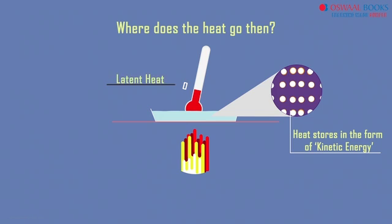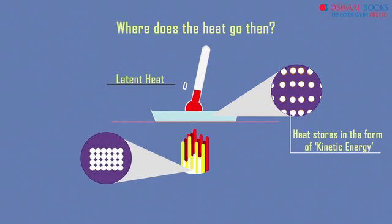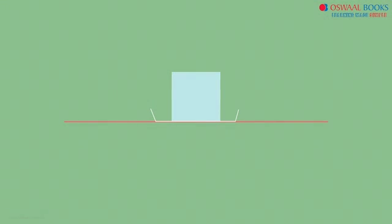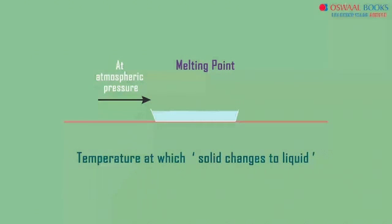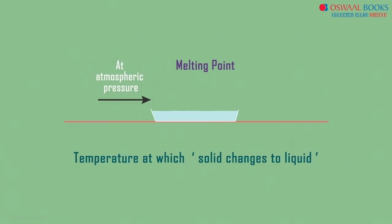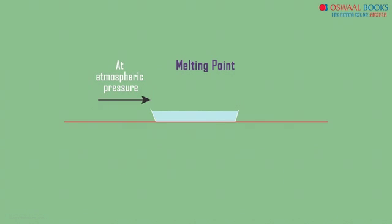What does this heat do? This heat helps the particles to overcome the forces of attraction that bind them to each other. The temperature at which the solid changes to liquid at atmospheric pressure is called the melting point. The melting point indicates the strength of the force of attraction between its particles.